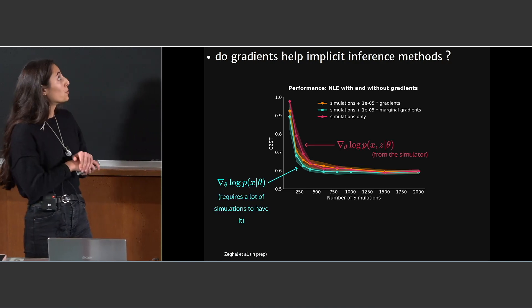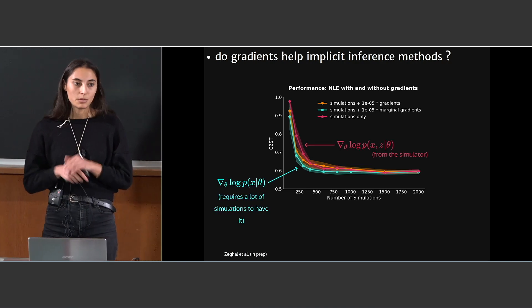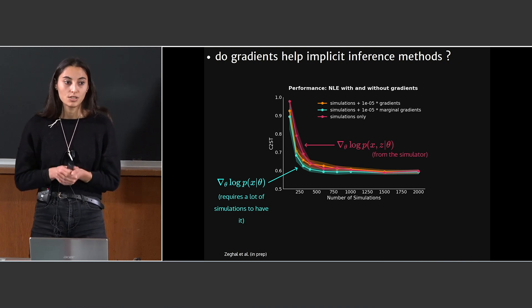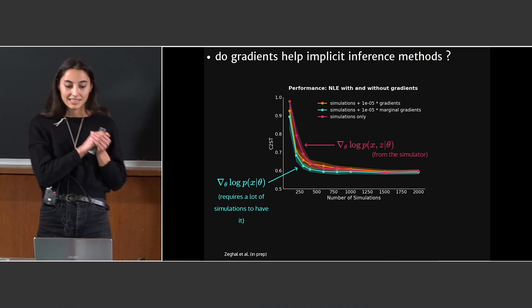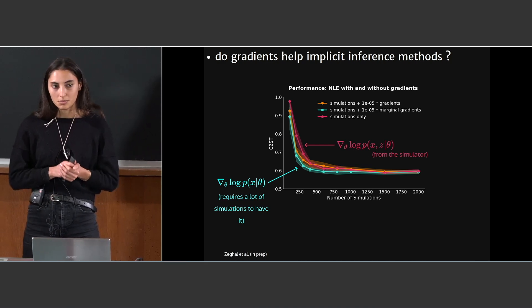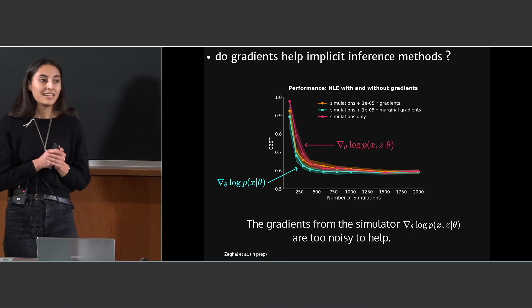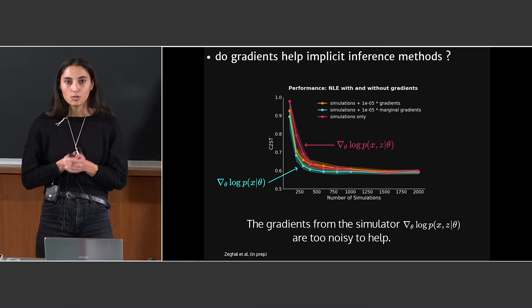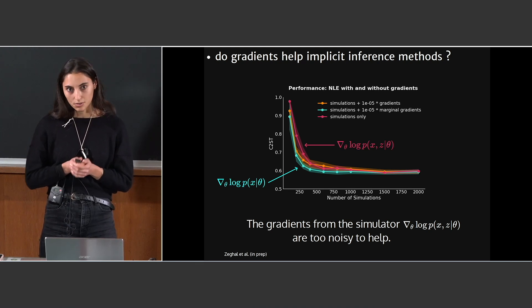To confirm that it was indeed coming from the latent variable that induced noise in the gradients, we learned the marginal score. In this case, with the marginal score, the gradients helped reduce the number of simulations. So we conclude that in our weak lensing inference problem, the gradient from the simulator won't help because they are too noisy.